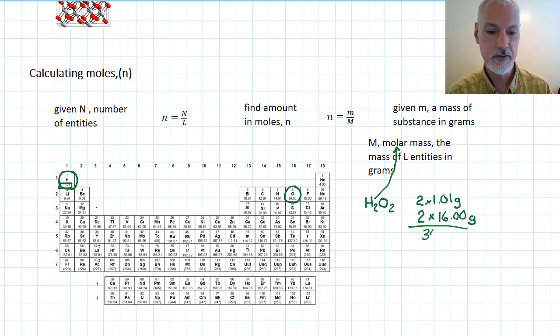I add that all up, and I get 34.02 grams. That would be the mass of one mole of hydrogen peroxide. Hence, we say its molar mass is 34.02 grams for every mole.